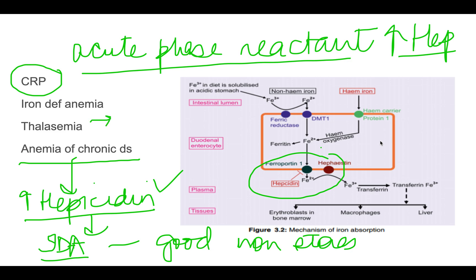In thalassemia, patients receive blood transfusions which cause iron overload. Future developments are towards finding hepcidin agonists — giving a hepcidin agonist means the body will not absorb the excess iron. In iron deficiency anemia with high hepcidin levels, they are trying to give parenteral iron so that absorption is not an issue.